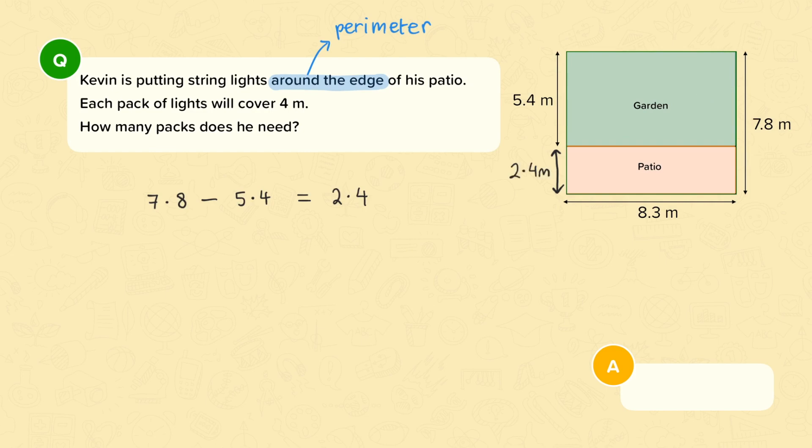So now we have enough information to work out the perimeter of the patio, or the distance around the edge. So I've got 2.4 plus 8.3 which gives me 10.7. And then I will have another 2.4 plus 8.3. So in total I've got 2 lots of 10.7 which is 21.4 metres.